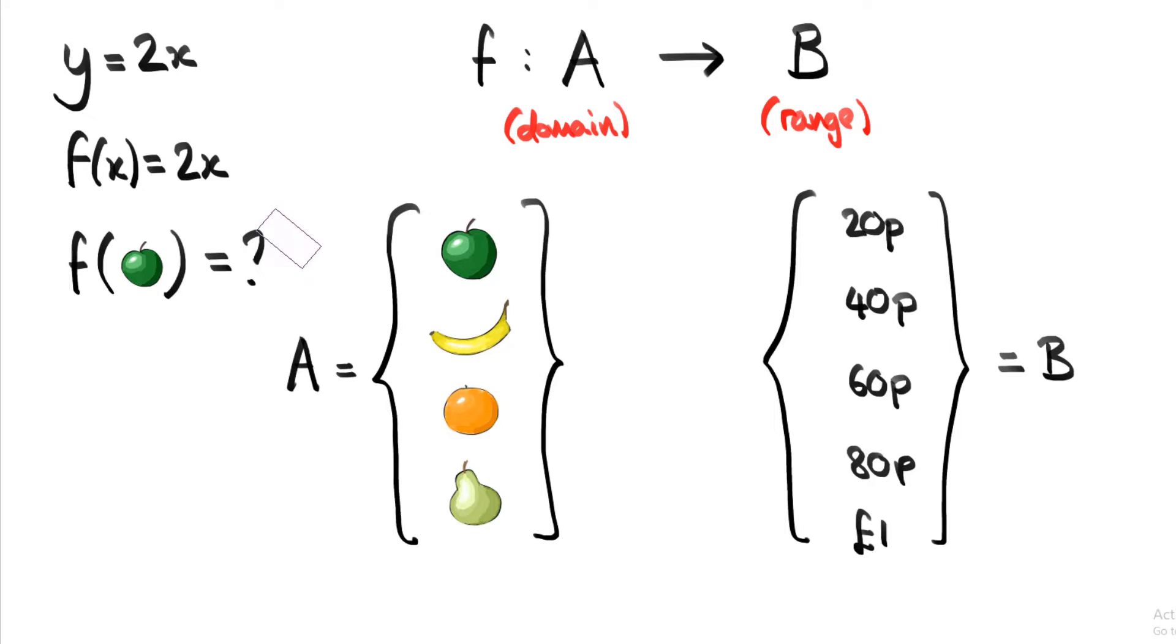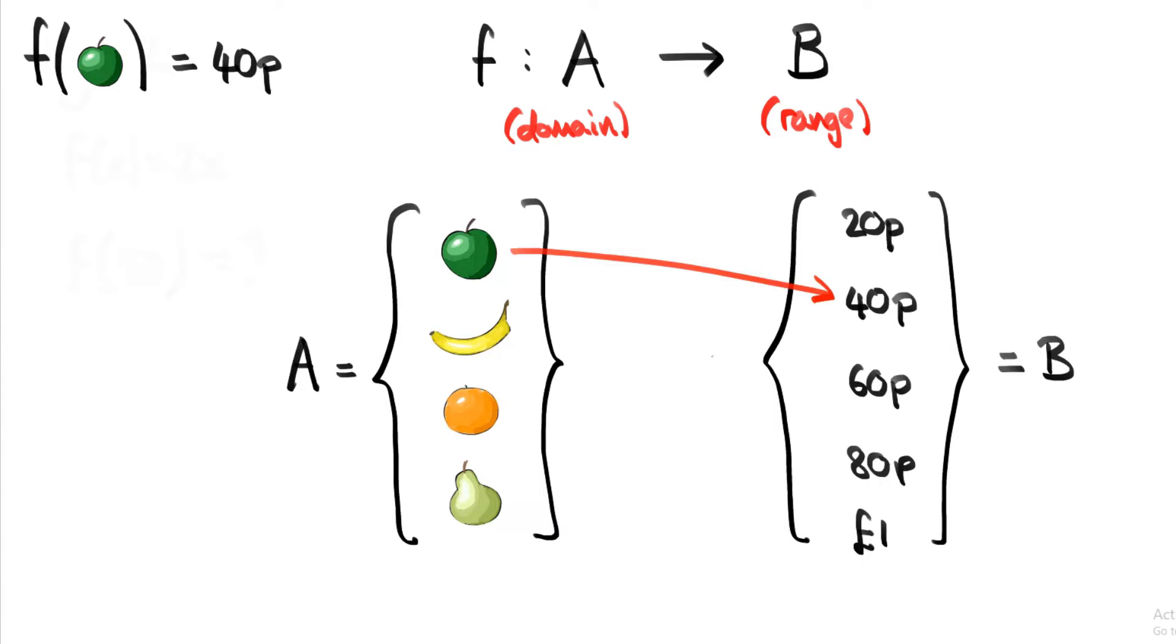Okay, and we want our function to tell us how much each fruit costs. So let's say, for example, that f of apple is going to be 40p. We can write down the function as usual, but we can also represent it by drawing an arrow. We can draw an arrow from apple in set A to 40p in set B.